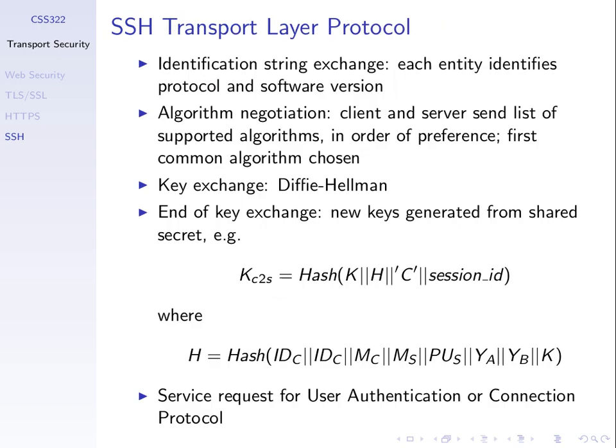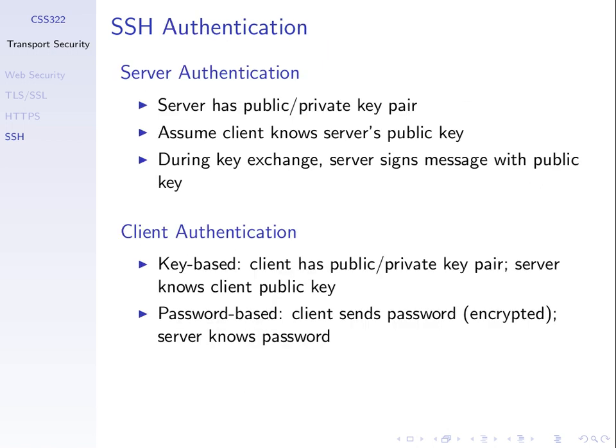In SSH, the server has a public and private key pair — say an RSA public and private key. We assume the client knows and trusts the server's public key. Therefore, if a server sends us something encrypted with its private key, we know it came from the server because we can decrypt with the corresponding public key. That's the authentication of the server. During the key exchange, the server signs messages with its private key.